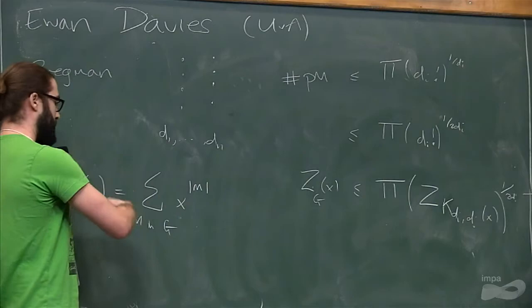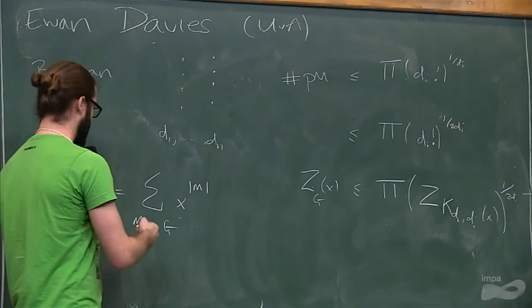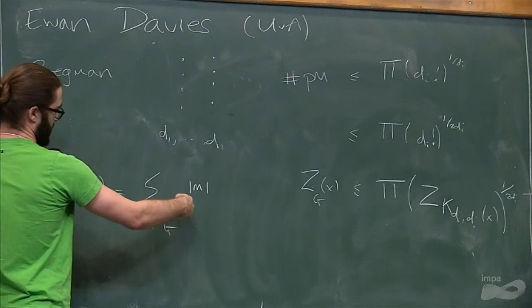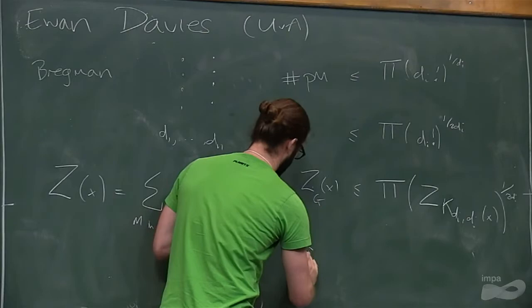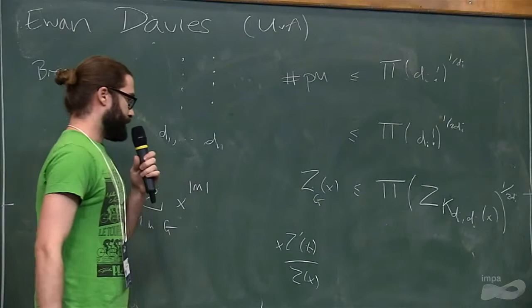If you pick a random matching, you can look at the Gibbs measure which this polynomial gives you. And if you pick a random matching with probability of each matching proportional to X to the power of the size of that matching, then the expected size of this matching is related to a derivative of this. It's something like Z'(X)/Z, maybe with another X here.